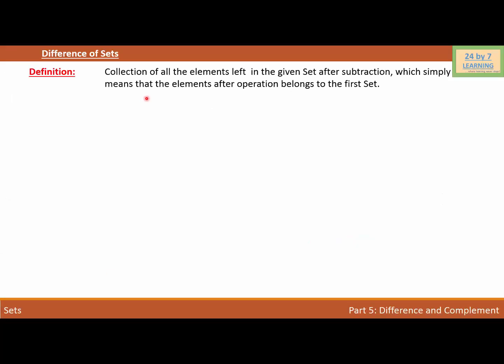Difference of sets: the collection of all the elements left in the given set after subtraction. This simply means that elements after the operation belong to the first set. In other words, if we subtract two sets, the result is equal to the elements left after subtraction that belong to the first set. The symbol used to represent the difference is the same as the subtraction symbol.